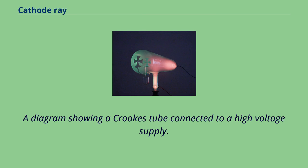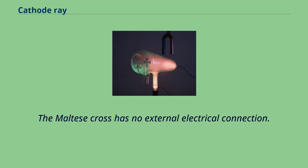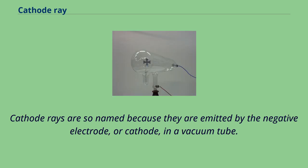A diagram showing a Crookes tube connected to a high voltage supply. The Maltese cross has no external electrical connection. Cathode rays are so named because they are emitted by the negative electrode, or cathode, in a vacuum tube.